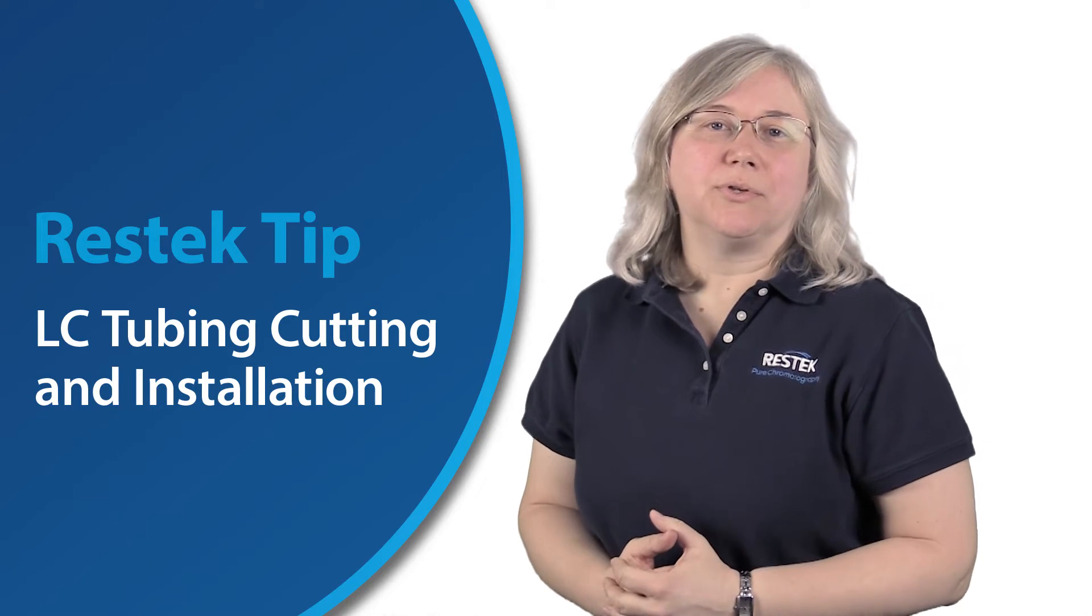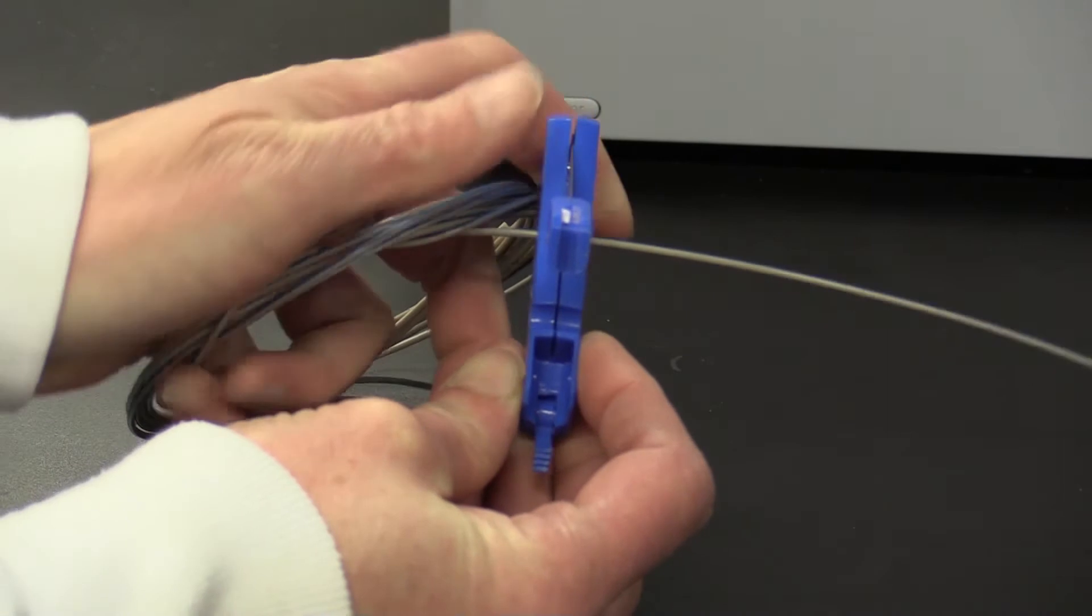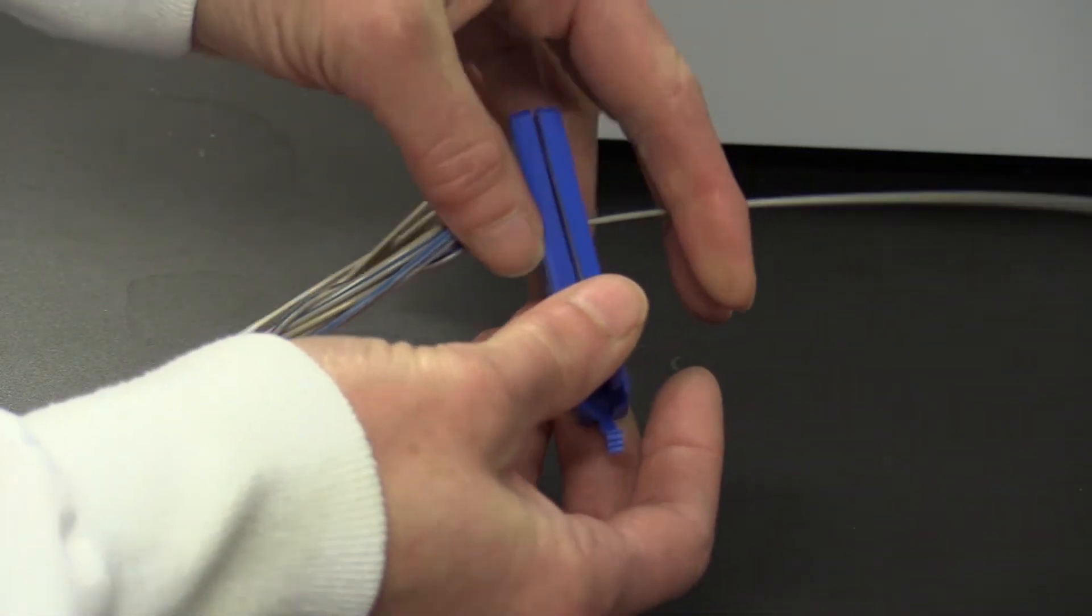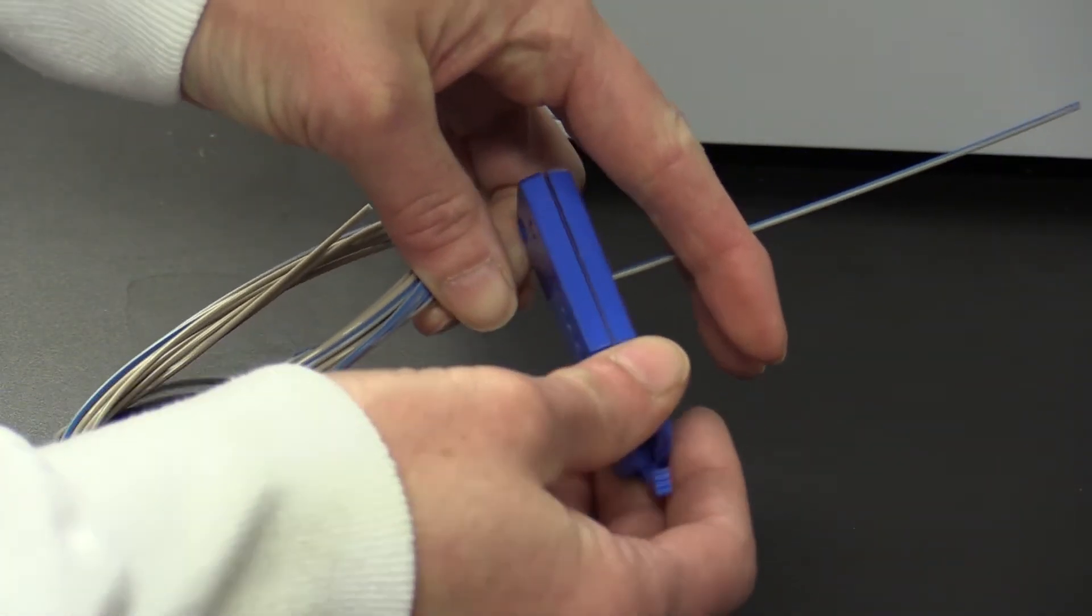You're probably familiar with the two types of tubing most commonly used for LC plumbing. The first is PEEK tubing, and when you're working with this, you always want to cut it with a guillotine-type cutter, not a razor blade and definitely not scissors.